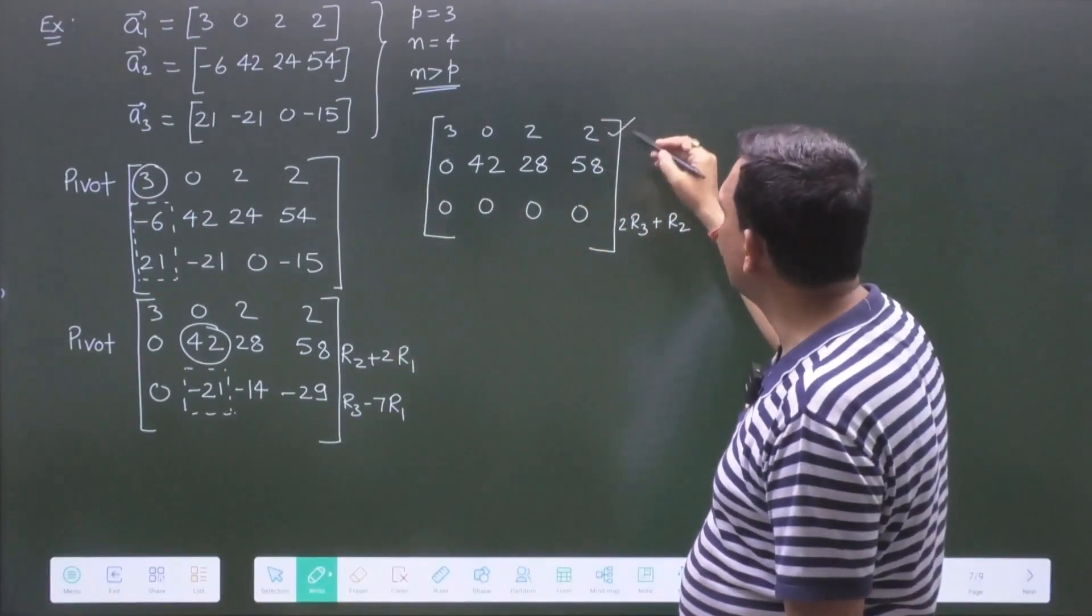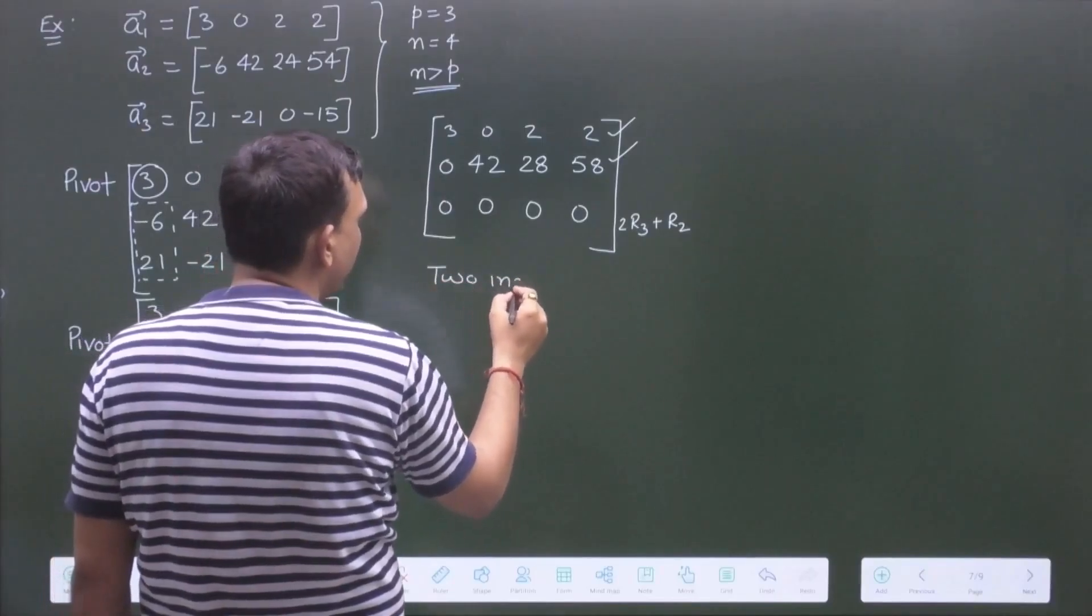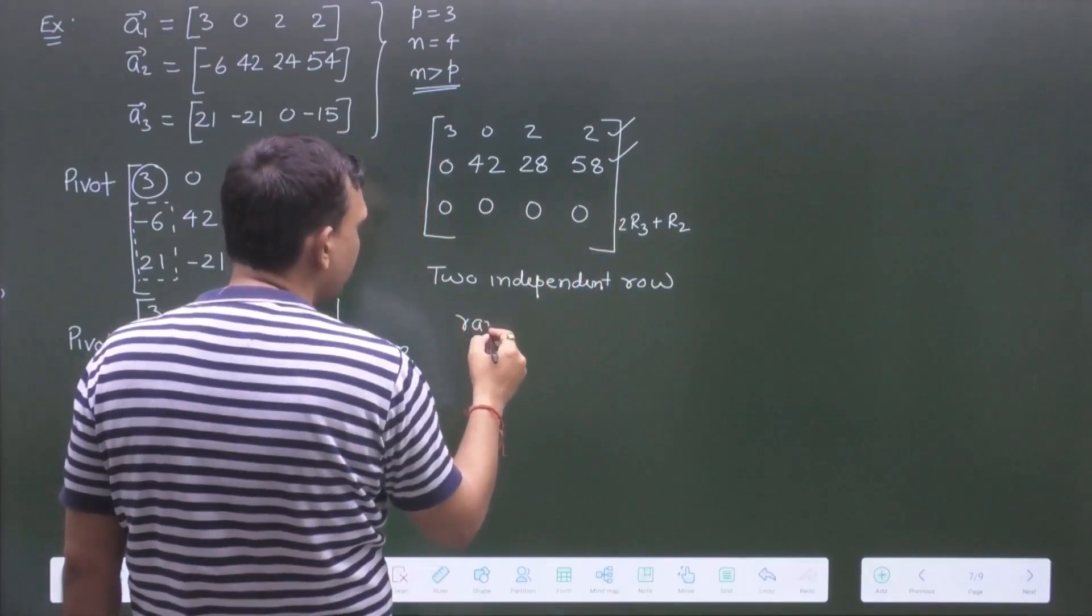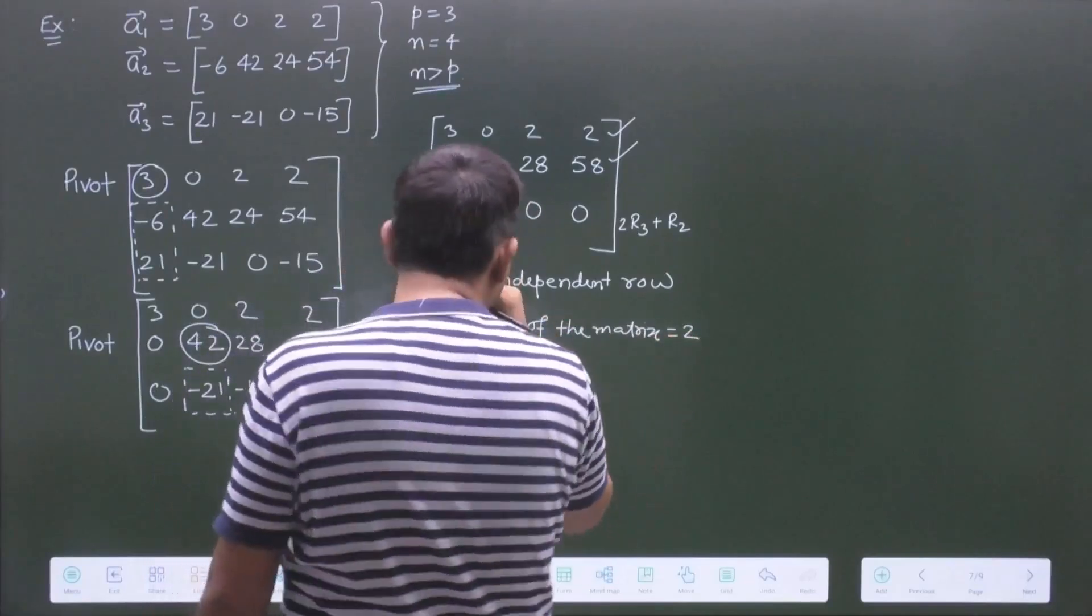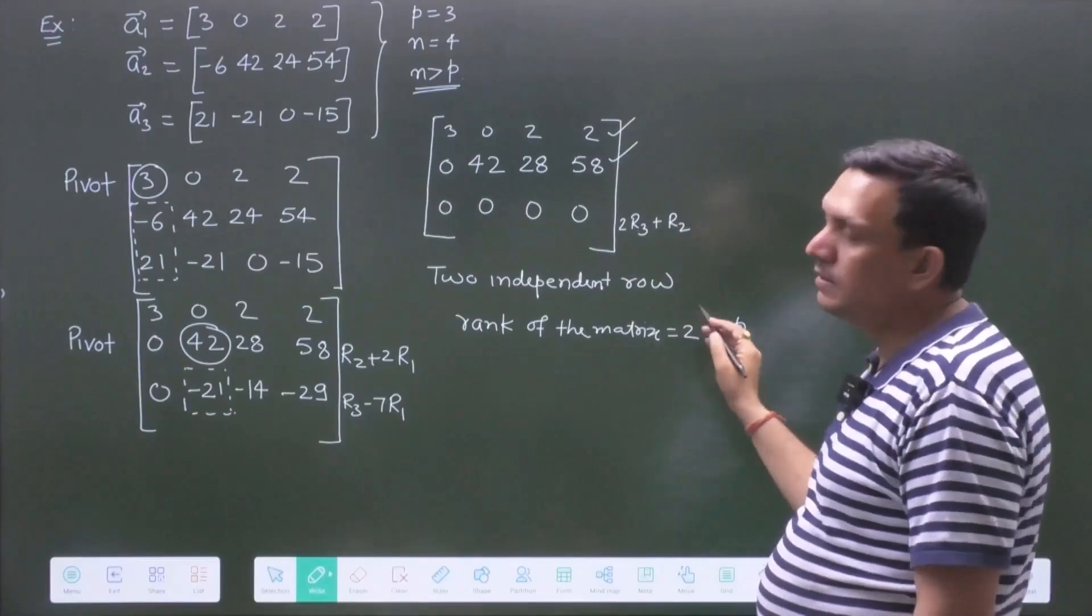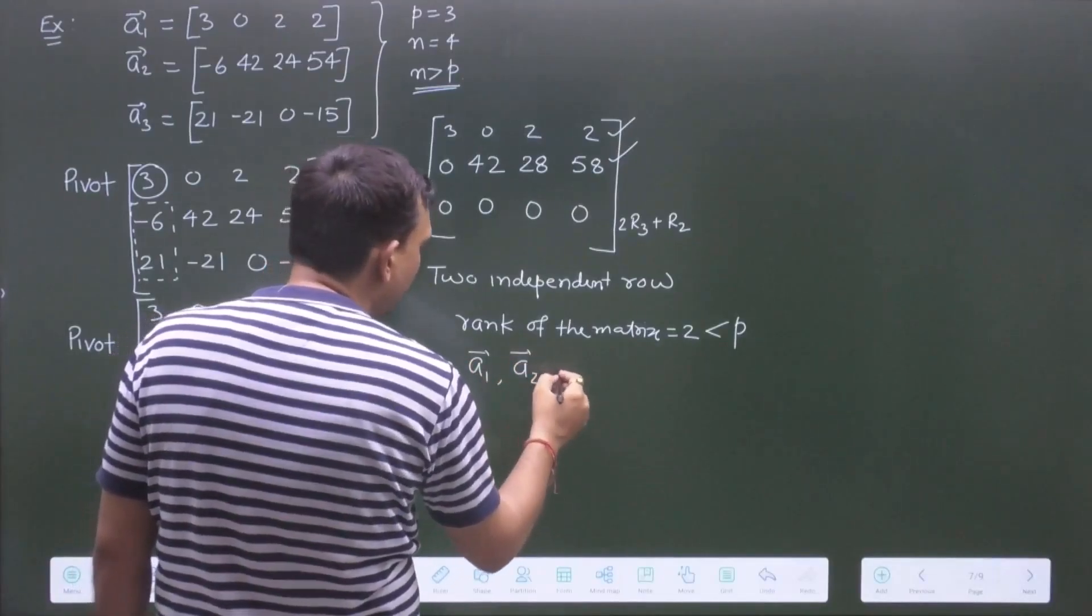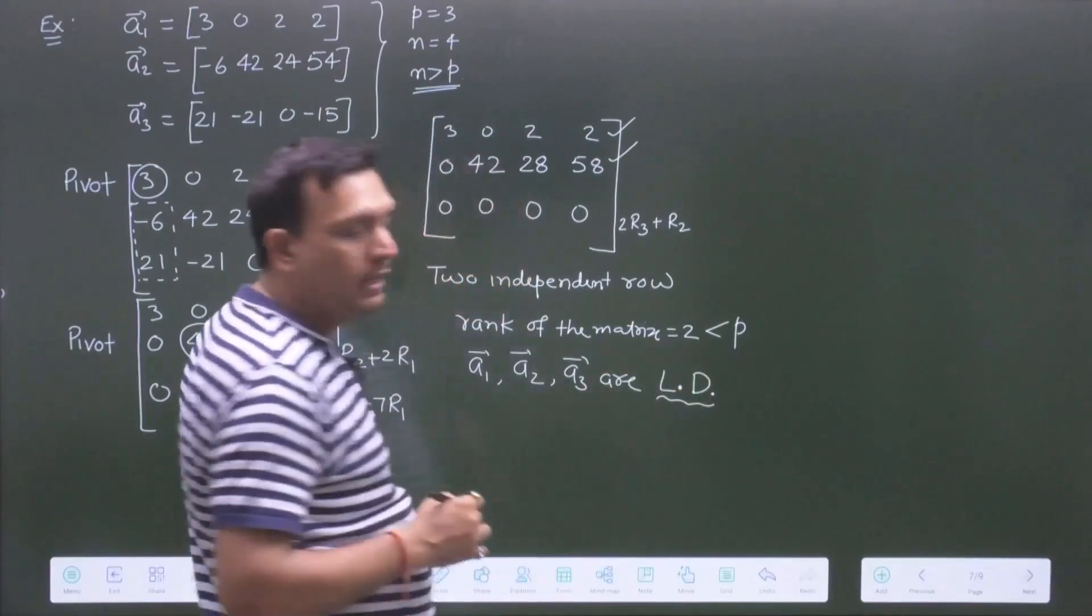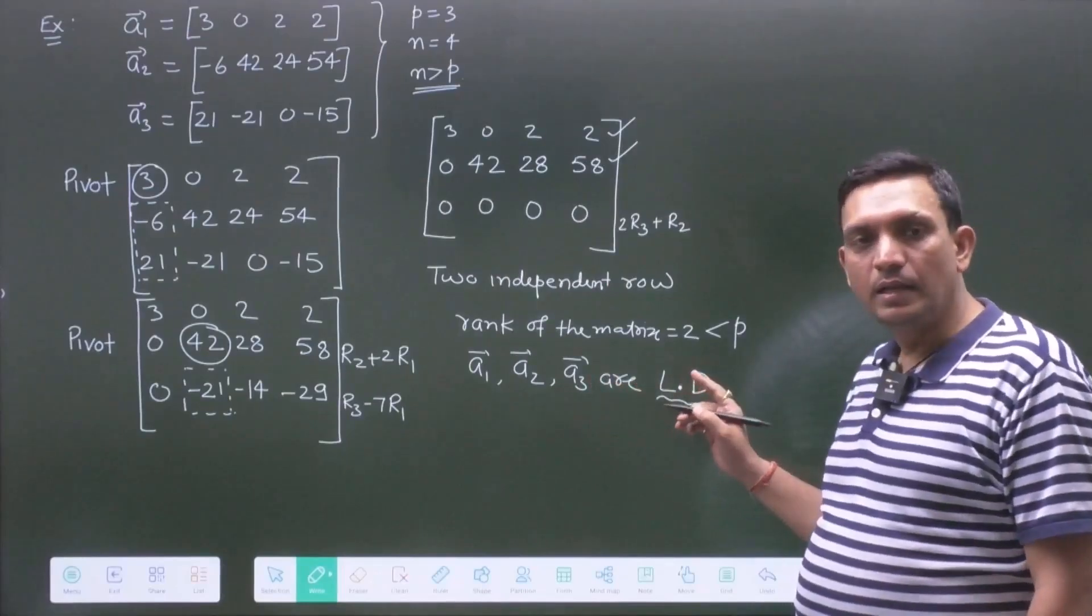Now, how many independent rows are there? There are 2 independent rows. So, in this case, we have 2 independent rows. So, what will be rank of the matrix? Rank of the matrix is 2. And this rank of the matrix is less than P. Just see: N greater than P, but rank of the matrix is less than P. So, what does it mean? A1, A2, A3 are linearly dependent. They are LD for linearly dependent. A1, A2, A3 are linearly dependent vectors.